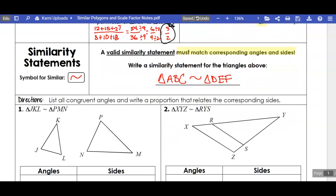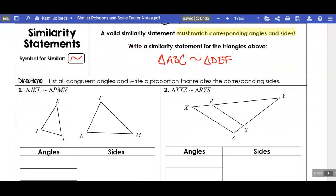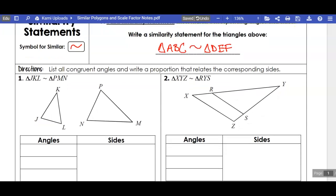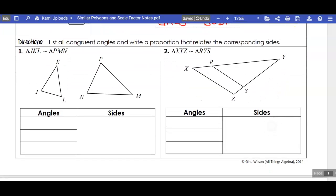If I know that two triangles are similar, remember from the last video, we know that the corresponding or matching angles are going to be congruent, and the corresponding sides are going to be proportional. When I say proportional, we're going to make ratios and set them equal to each other.